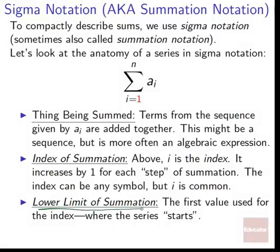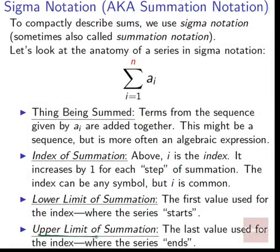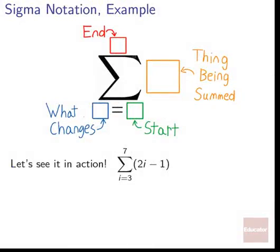The lower limit of summation is the first value used for the index — this is where the series starts. Since i equals one, our first value would be plugging in a one for i. The upper limit of summation is the last value used for the index — where the series ends — so we step up until we eventually get to some value n. Let's see it in action — this pictorial summary is a great reference if you get confused later.